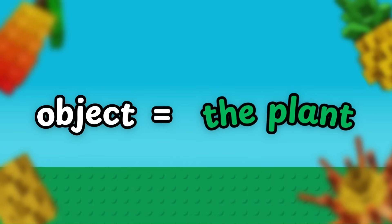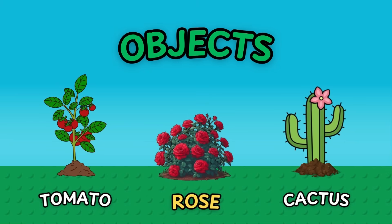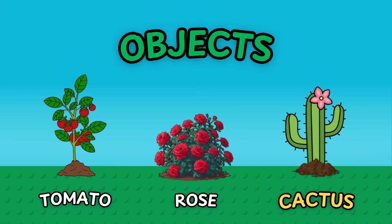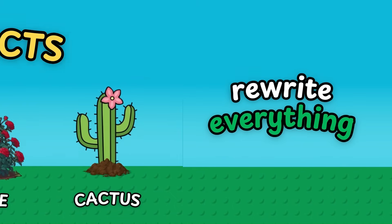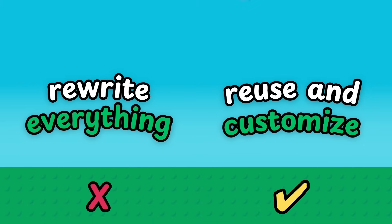An object is what you get when you use the class blueprint to actually create something. Think of it like printing a 3D model from a design. A tomato plant is an object, a rose is another object, and a cactus is also an object — all of them come from the plant class. But once they exist, they are real things in your garden with their own characteristics. That way, you don't need to rewrite everything; you just reuse and customize.